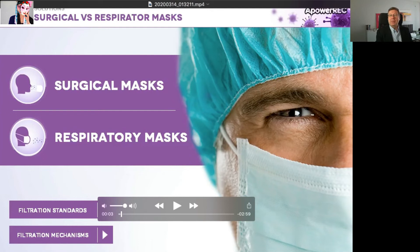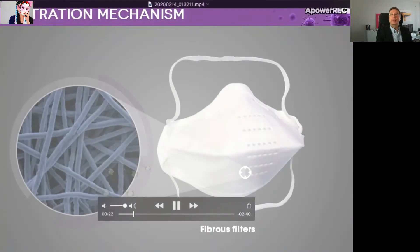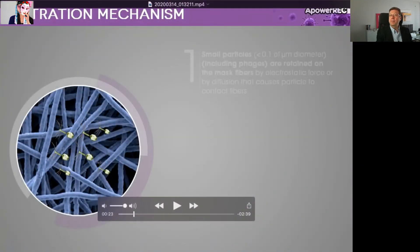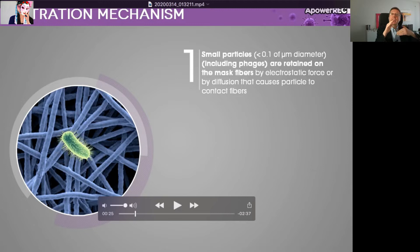We have two different types of masks: the surgical masks and the respirators. But before going to see the differences, let's start with the filtration mechanism, how they work. We have very small particles that actually fit to pass through, but they will be filtered out because they are so small and the filter media has electrostatic charges. As they are passing through, the electrostatic charges will attract them, and they are so small and light that they will be attracted.